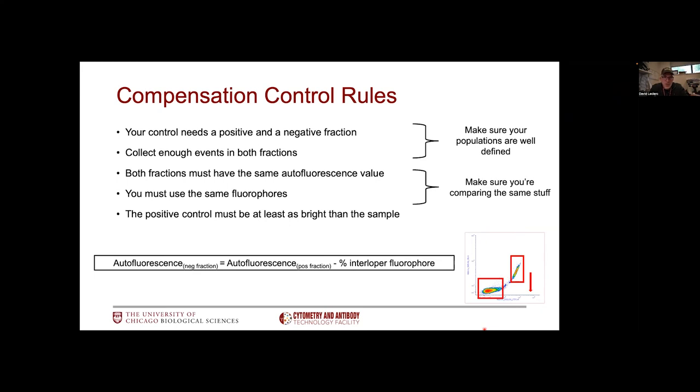The next two rules make sure that you're comparing the same stuff. The first one says both fractions must have the same autofluorescence value. This is fundamental if the goal is to subtract the percentage of a signal spilling into the wrong detector so that the autofluorescence of one fraction is equal to the autofluorescence of the positive fraction. Obviously, you want the autofluorescence to be the same to begin with.